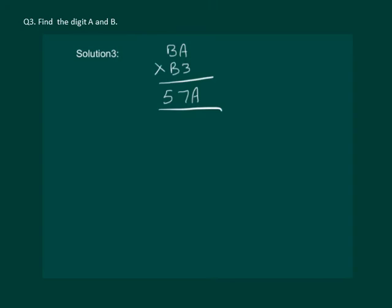This can only happen if A is equal to 0. Then if we take B0 times 3 we will get 3 zeros of 0 and 57.